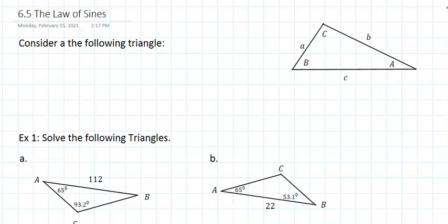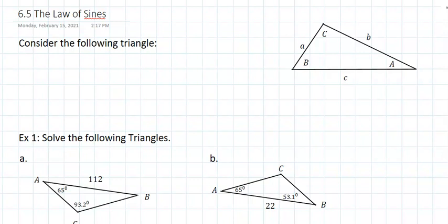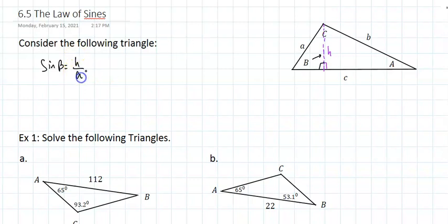Section 6.5 talks about the law of sines. Consider the following triangle. If I take the height, given all of these angles and sides, and take the sine of angle beta, that's the opposite over the hypotenuse. So if I cross multiply, I will get the height of this triangle to be A times the sine of angle beta.